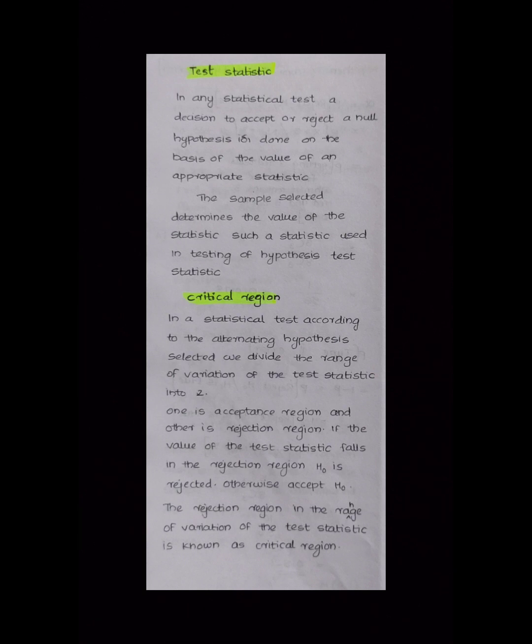The sample selector determines the value of the statistics used in testing of hypothesis. This is known as the test statistic. The rejection region in the range of variation of the test statistic is known as the critical region.